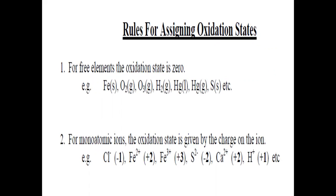There are rules to assign oxidation states and oxidation numbers. The first rule: for a free element, the oxidation state is zero — elements not bearing any charge before going into a reaction. Elements in a monoatomic state can bear positive or negative oxidation states. For example, chlorine always bears minus one. Other elements may have oxidation states like plus two, plus three, or plus one.